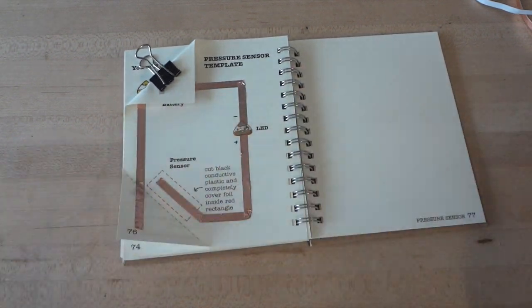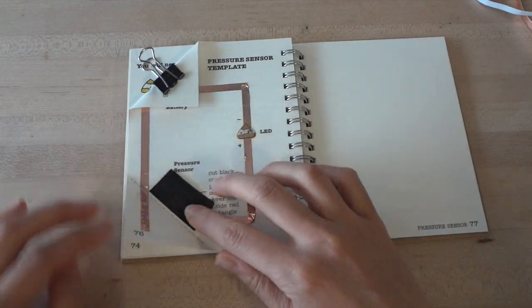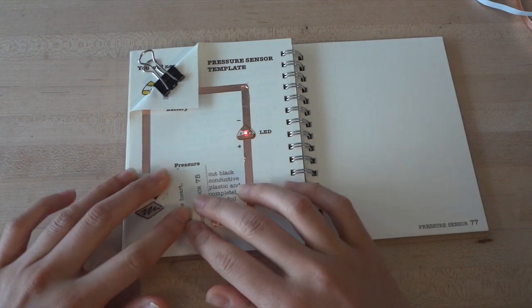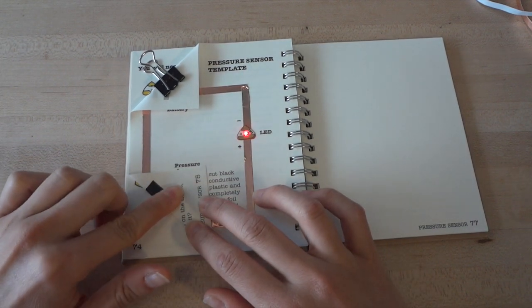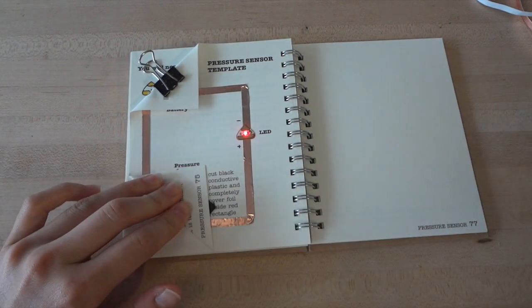Next, take your pressure-sensitive plastic sheet and cut it to match the rectangle on your template. Place it over the rectangle and then fold the bottom flap up again. Now it's the pressure-sensitive sheet that closes the gap in your circuit. The harder you press, the brighter your light will shine.